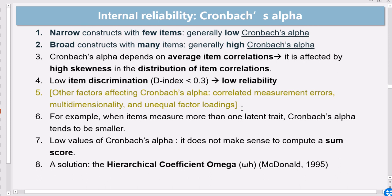But Cronbach's alpha is also sensitive to the low item discrimination. In classical test theory, we have a concept called D-index, or item discrimination, which if it's below 0.3, then you probably will get a lower Cronbach's alpha than if your item discrimination were above 0.3.